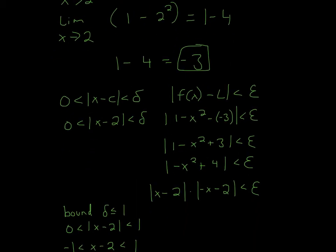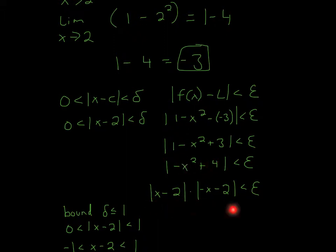And then it's less than epsilon. So here you just simplify: negative negative makes a positive, so positive 1 plus positive 3 equals positive 4. And then you can factor that out to make |x minus 2| times |negative x minus 2| less than epsilon.